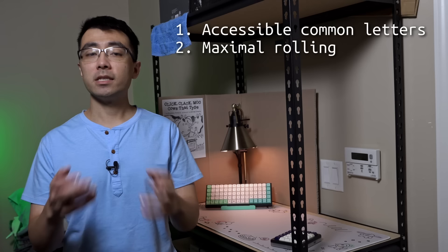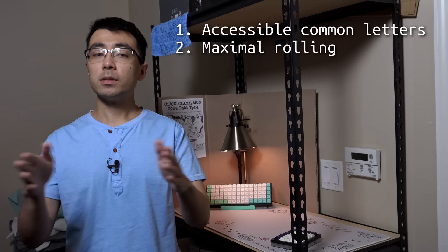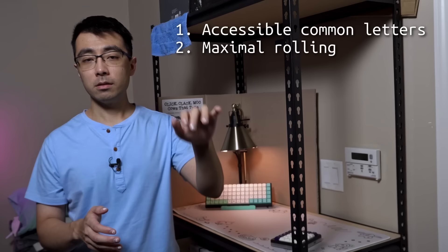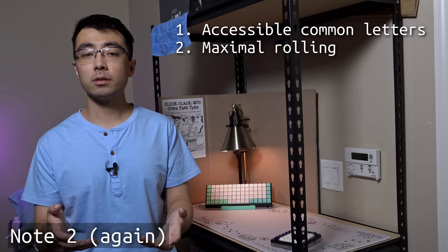Two, rolls. Just placing letters based on frequency isn't the whole story. In particular, one fast and generally comfortable typing technique is known as rolling. Essentially, this is some sequence of letters that can be typed with different fingers, moving either strictly left to right, or strictly right to left. Such a motion can be performed with a small and fast wrist rotation, or roll, hence its name. So I want to place common letter sequences in configurations that enable rolls.